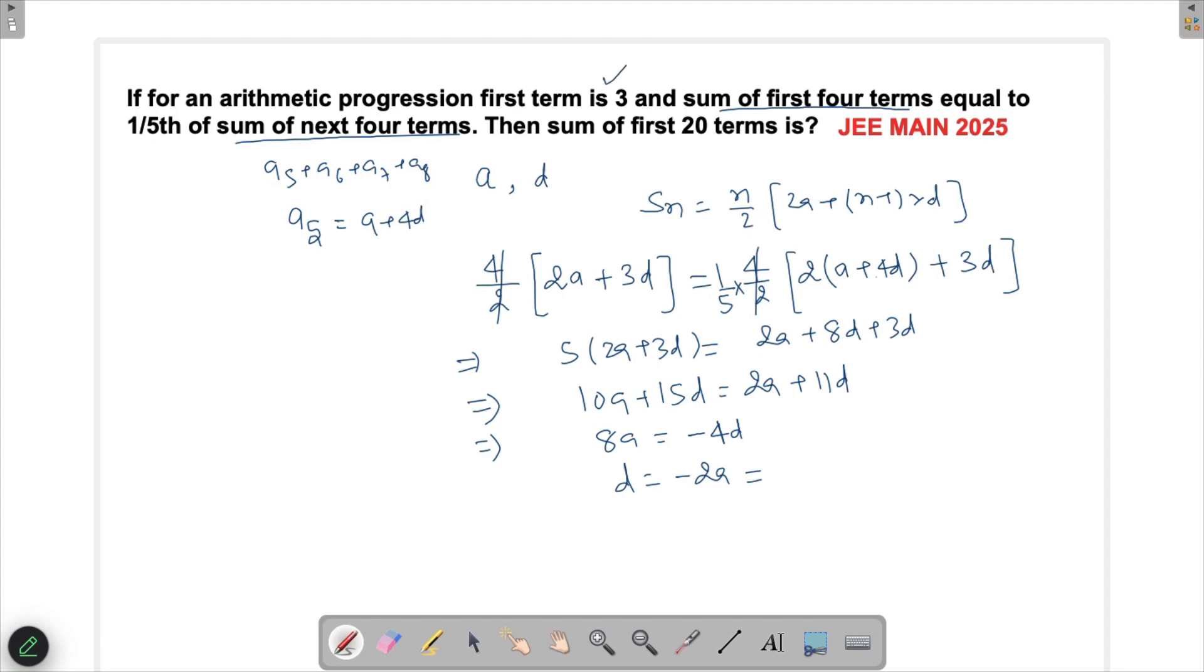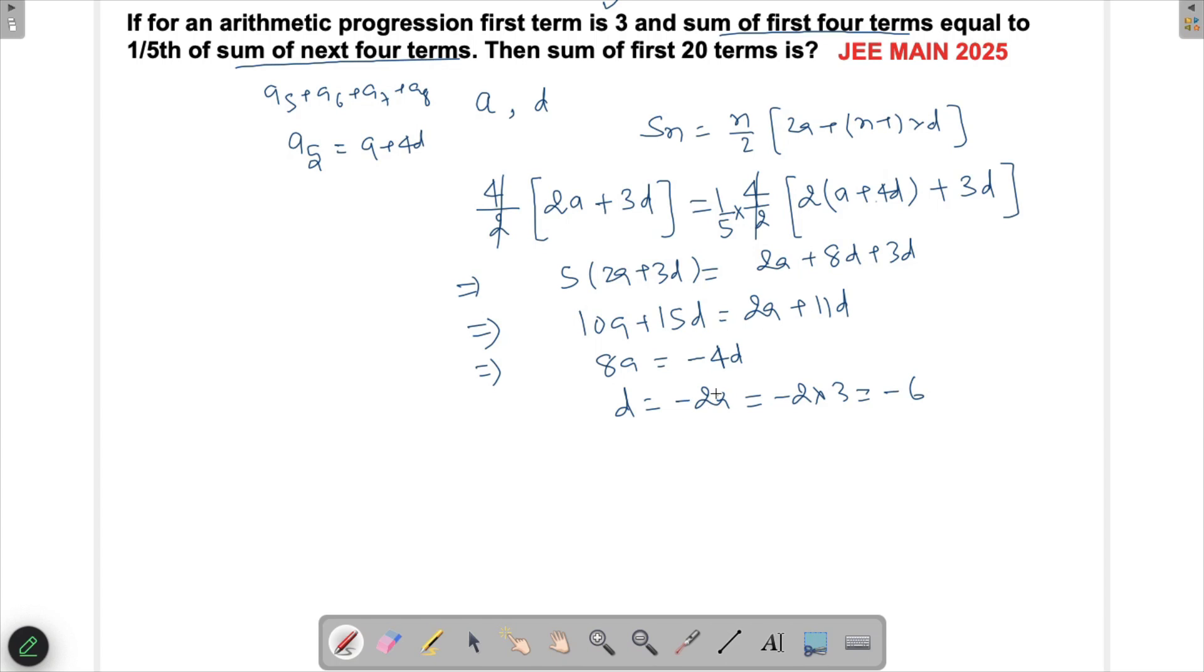Now I can substitute a = 3, so d = -2(3) = -6. We've got d and a, so now we can find the sum of the first 20 terms.